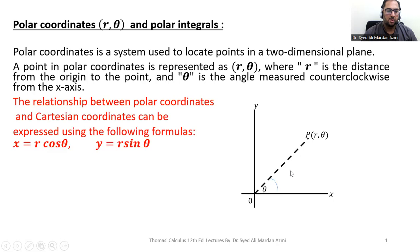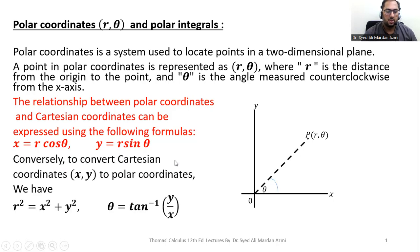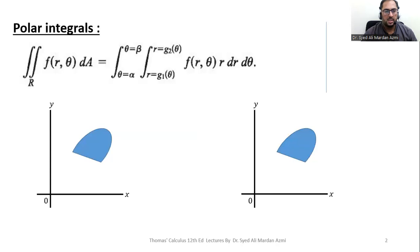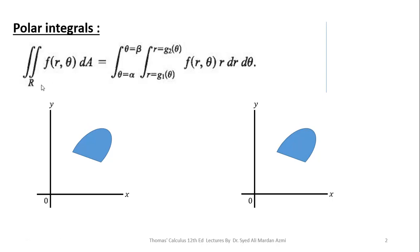These are the transformation equations to convert the Cartesian coordinate system into the polar coordinate system: x = r cosθ and y = r sinθ. For the reverse process, r² = x² + y² and θ = tan⁻¹(y/x). This is the general representation of a polar integral: the double integral over the region of f(r, θ) dA equals ∫∫ f(r, θ) r dr dθ.